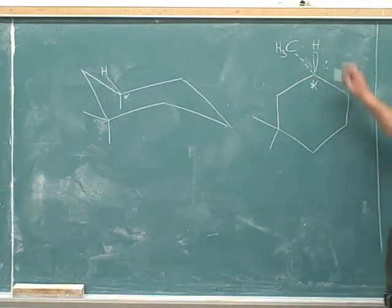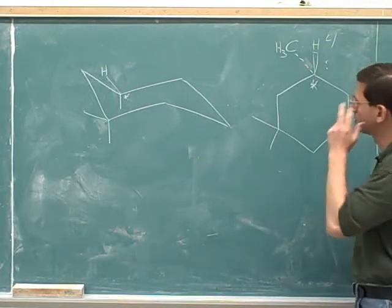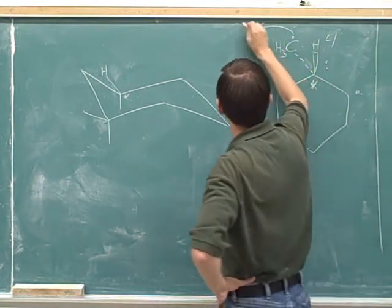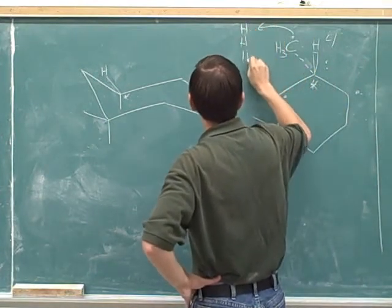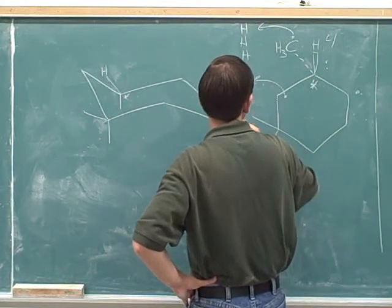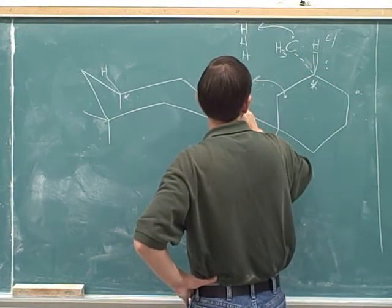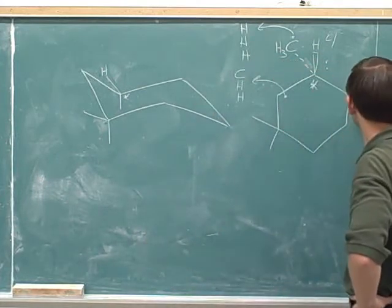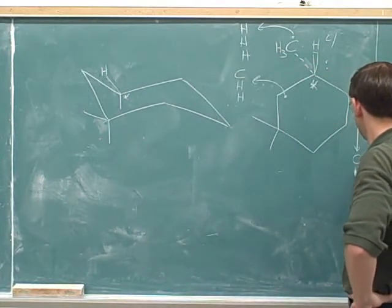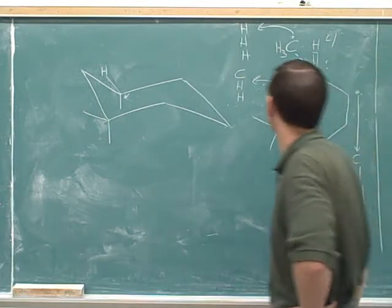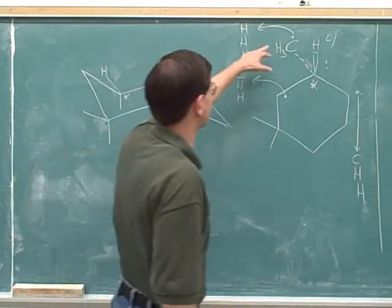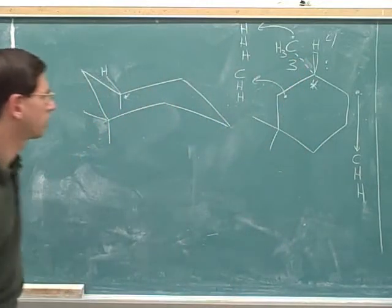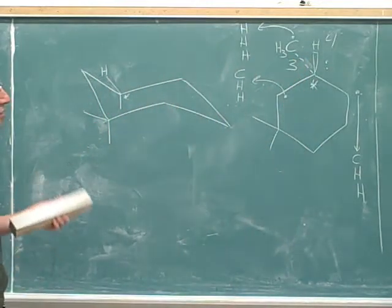Okay, now we can assign the priorities. Based on these lists, you can see that the methyl group is the number three priority. The other two carbons are still tied.